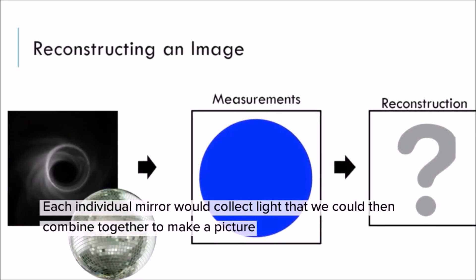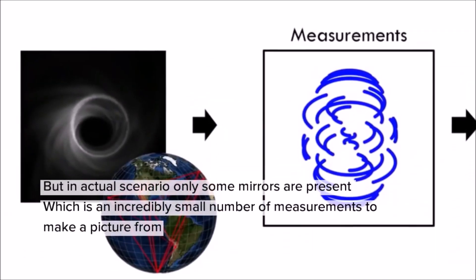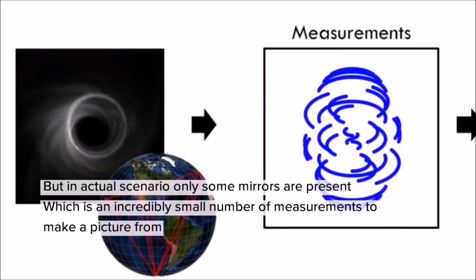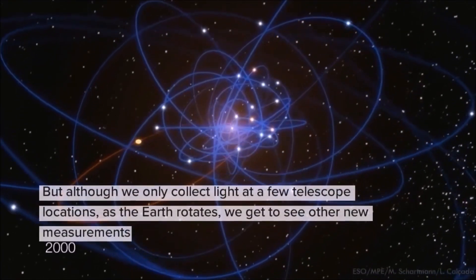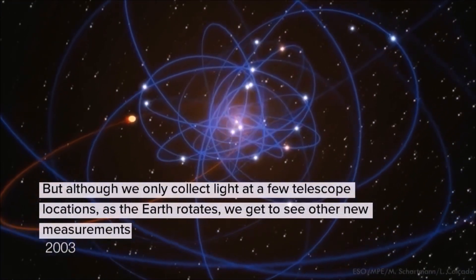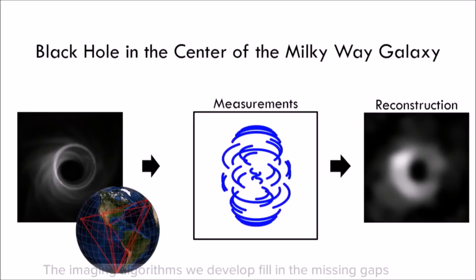But in the actual scenario, only some mirrors are present, which is an incredibly small number of measurements to make a picture from. But although we only collect light at a few telescope locations, as the Earth rotates, we get to see other new measurements.